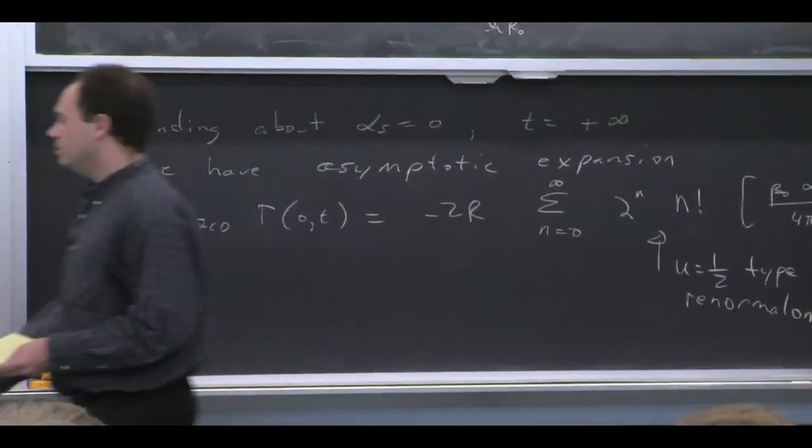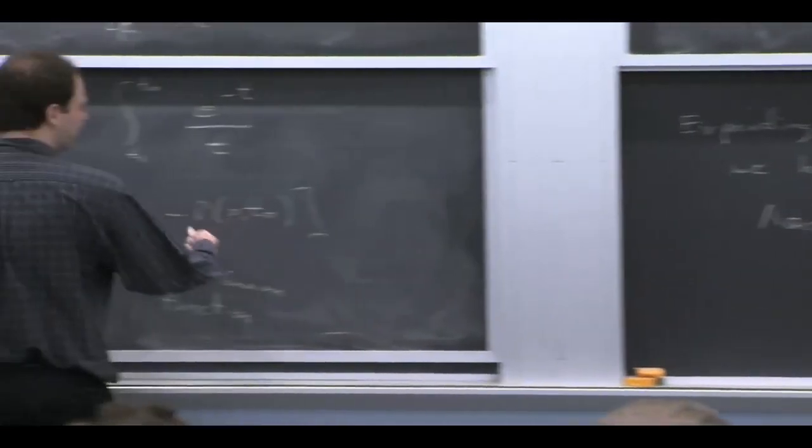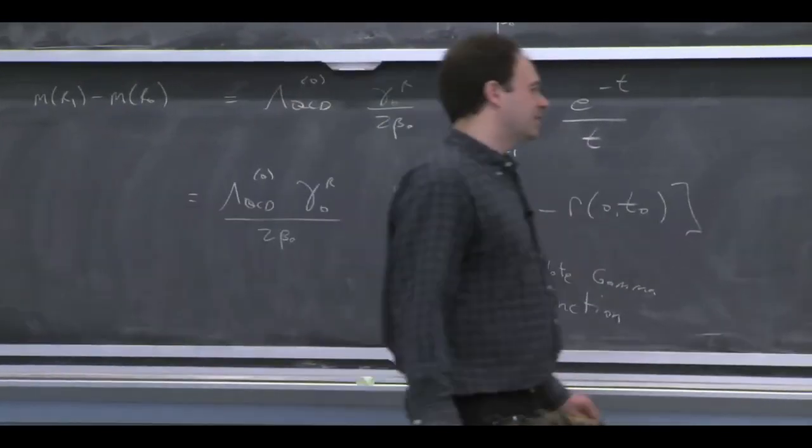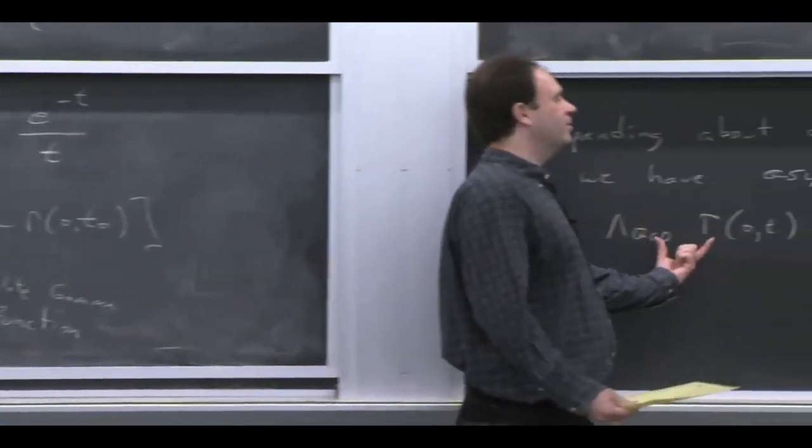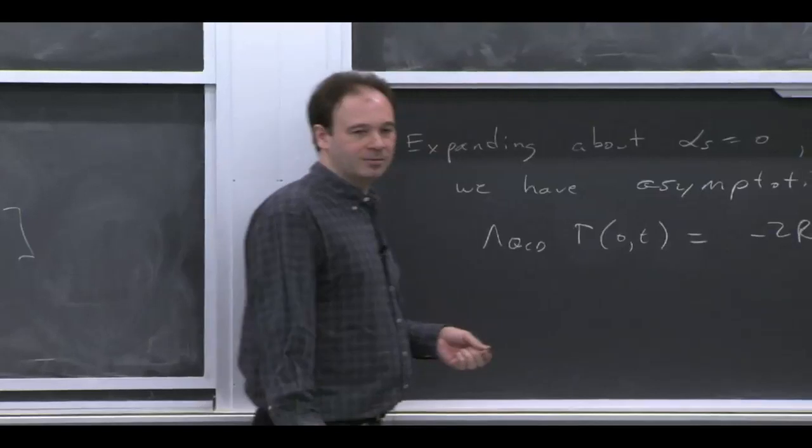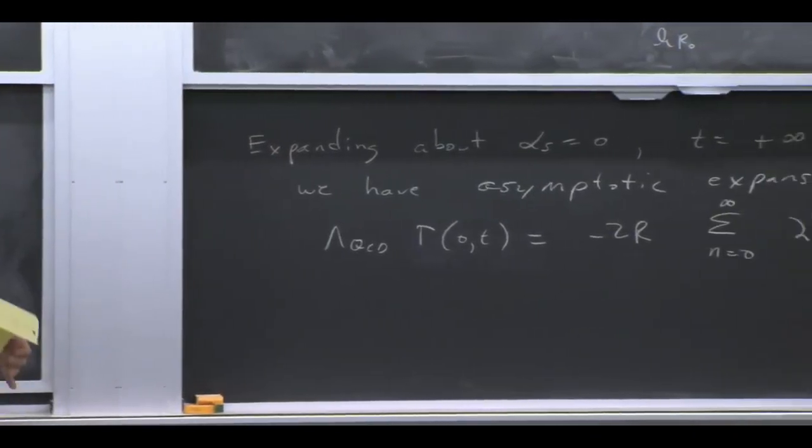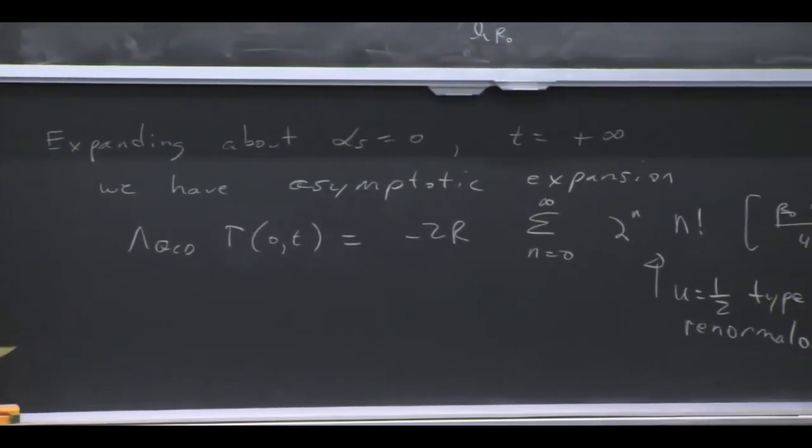And so what's happening is when you take the difference of two of these gammas, you're converting this asymptotic series. If you take the difference of two of these asymptotic series, you're converting it into a convergent series. And we'll talk a little bit more about that next time, but I'll stop there.